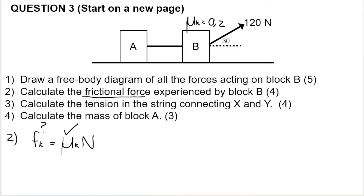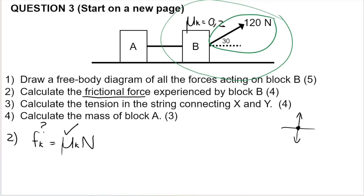A lot of students make this mistake: because the block is on a flat surface, they think the normal force equals the weight. That's only true if there are no other forces acting upwards. However, in this example, we have the applied force acting up and to the right at an angle. So we can't say the weight and normal force are equal for block B.